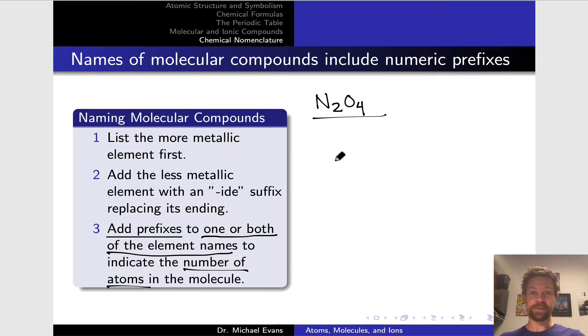Nitrogen is more metal-like. It's further to the left on the periodic table than oxygen, so we're going to list nitrogen first. Oxygen is less metal-like and more anion-like in the compound, so we're going to list that as oxide using that 'ide' suffix to replace its ending. We need to indicate the numbers of each type of atom in the compound. Nitrogen has two, we use a 'di' prefix - these are Greek numeric prefixes. Four, we use 'tetra' to indicate that there are four oxygens. So the name here is dinitrogen tetroxide.